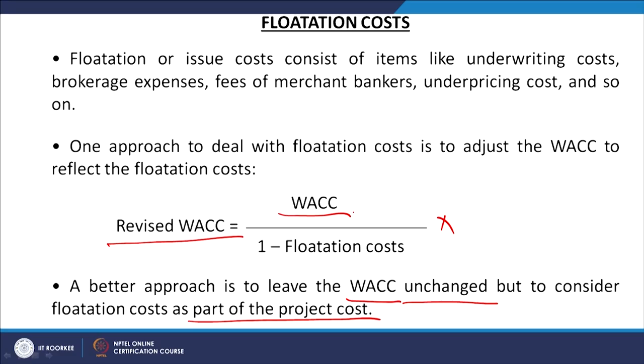We discussed two approaches in the previous class. The first approach was to revise the weighted average cost of capital and jack up the WACC. For example, if it is 12 percent and we add the flotation cost of 6 percent, it becomes 12.77 percent. But that is a wrong approach because the flotation cost is not an annual cost — it is a one-time cost.